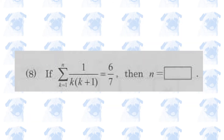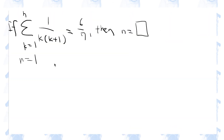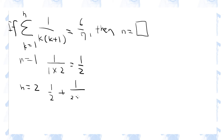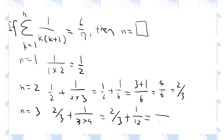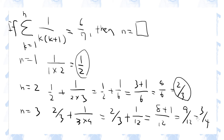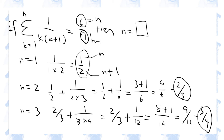Number 8. When n equals 1, 1 over 1 times 2 is 1 half. When n equals 2, it is 2 over 3. When n equals 3, it is 3 over 4. The pattern shows the numerator is always n and the denominator is always n plus 1. Since 6 must be n and 7 must be n plus 1, n must be 6.